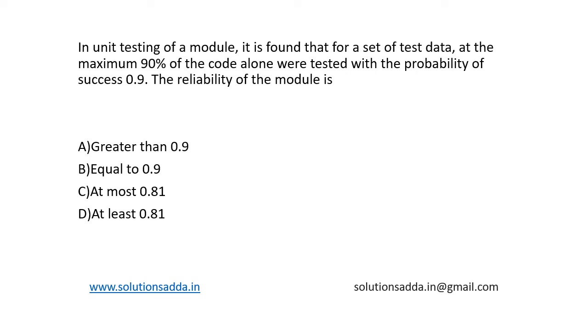This is a software engineering question. In unit testing of a module, it is found that for a set of test data, at the maximum 90% of the code were tested with the probability of success 0.9. The reliability of the module is what? Four options are given here.